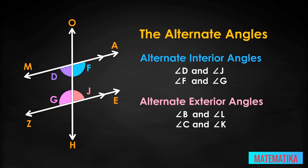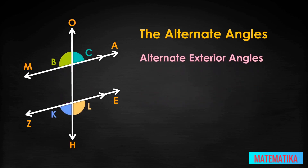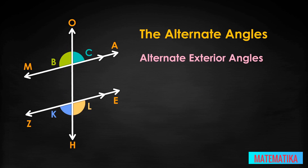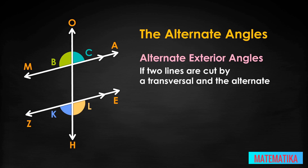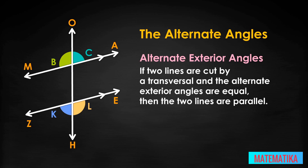Now let's prove lines are parallel with the alternate exterior angles. If just one of our two pairs of alternate exterior angles are equal, then the two lines are parallel, because of the alternate exterior angle converse theorem, which says: if two lines are cut by a transversal and the alternate exterior angles are equal, then the two lines are parallel. Angles can be equal or congruent — you can replace the word equal with congruent without affecting the theorem.